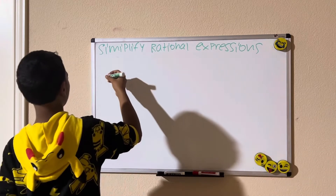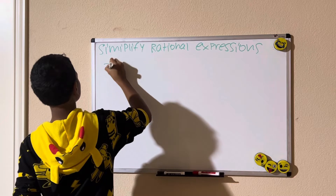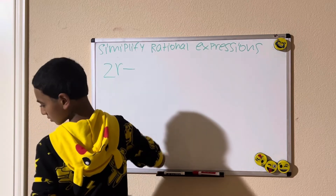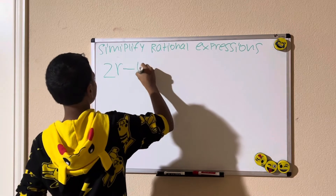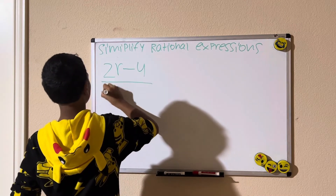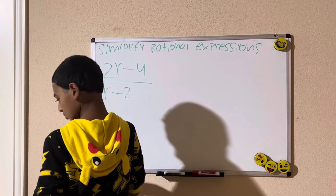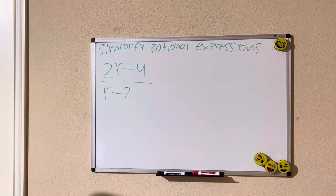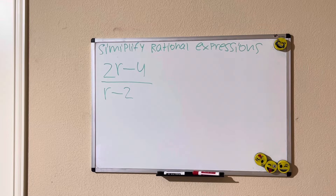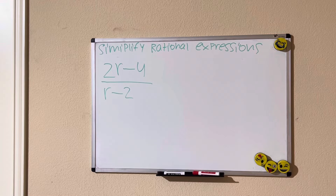Let's do another example: 2r minus 4 divided by r minus 2. I'm going to give you guys time to solve this one and simplify it. Think about it — find the greatest common factor, then cancel out the rational expressions.